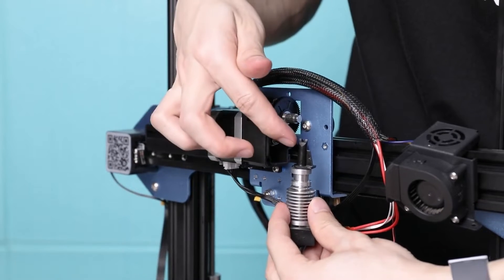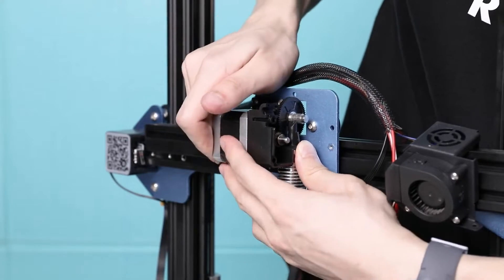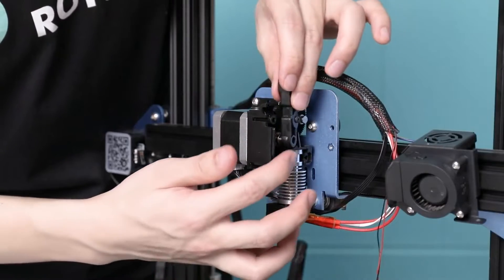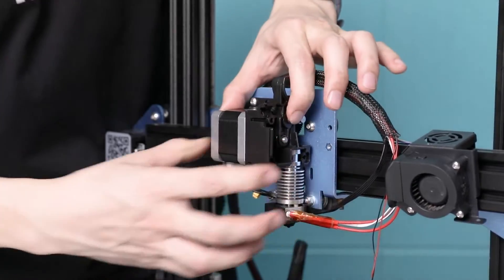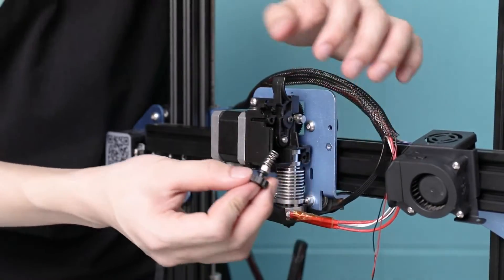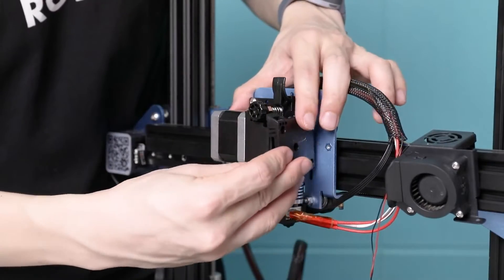Adjust the filament guide and insert the heat sink into the extruder assembly. Reinstall the filament load lever. Reinstall the spring loading assembly. Bring back the cover of the extruder.